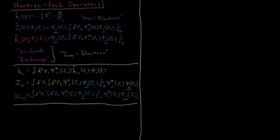Last time we looked at some of the energy expressions for Hartree-Fock theory applied to atoms, and now we're going to look deeper into some of the operators in Hartree-Fock theory. We have first our one-electron operators: h_i acting on orbital i for electron one. This is just the kinetic energy of that electron and its attraction to the nucleus, with the Laplacian operator being the second derivative with respect to all three spatial dimensions, z being the number of protons, and r_i being the distance from the nucleus. All of these are in atomic units.